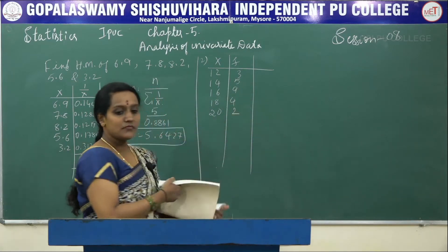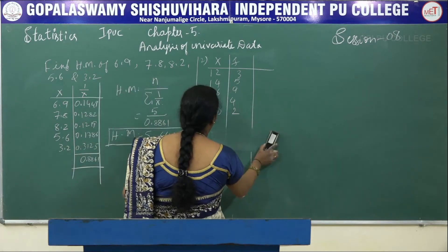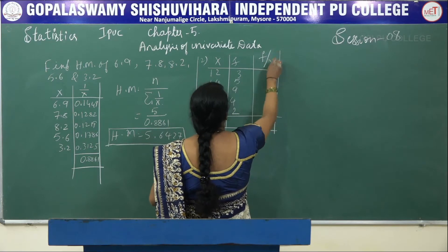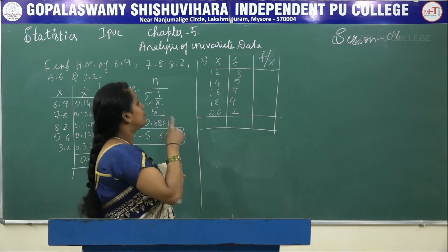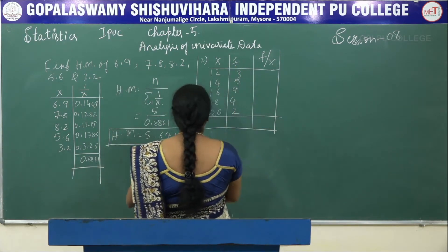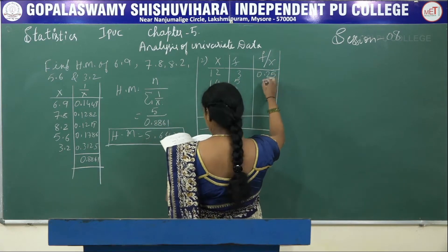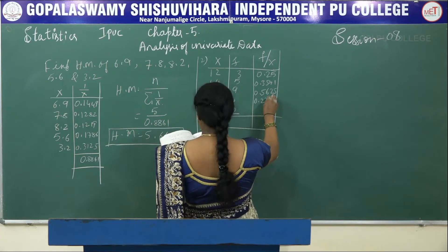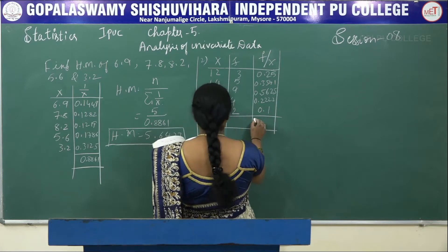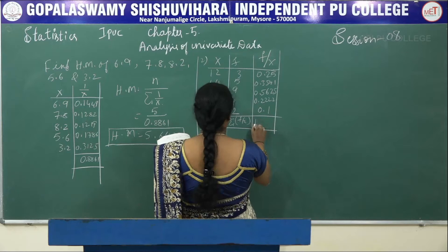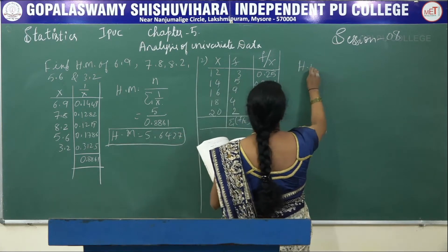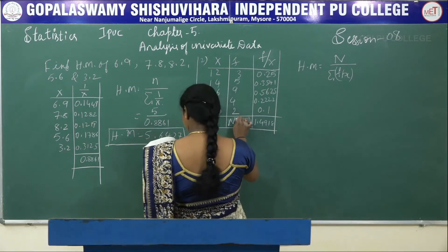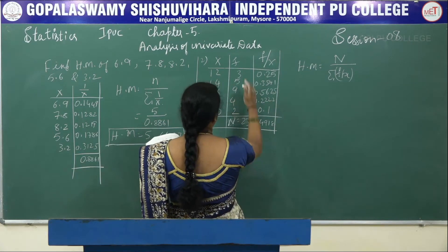Next problem: calculate HM where X values are 12, 14, 16, 18, 20 and frequencies are 3, 5, 9, 4, 2. Instead of taking the reciprocal directly, you take the ratio F divided by X. The F/X values are 0.25, 0.3571, 0.5625, 0.2222, and 0.1. The summation of F/X is 1.4918. The formula for HM is N divided by summation of F/X.